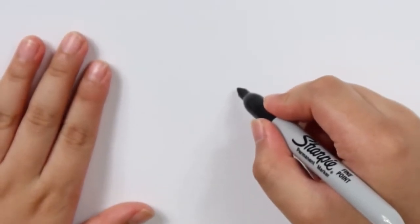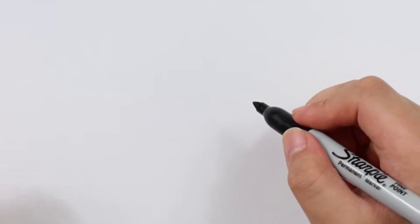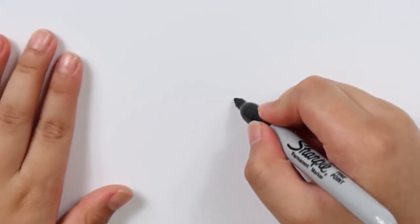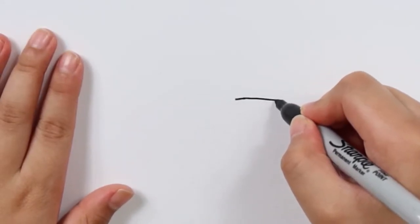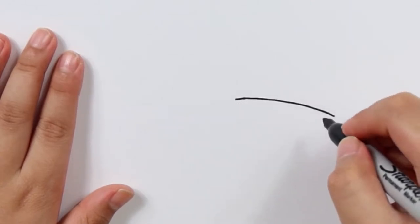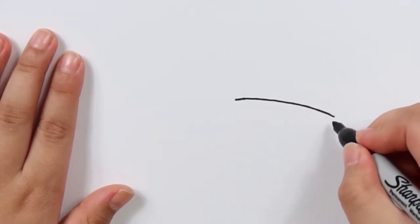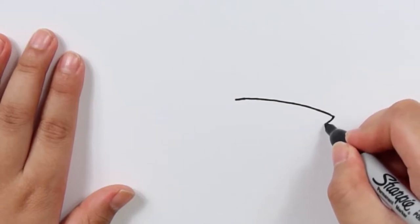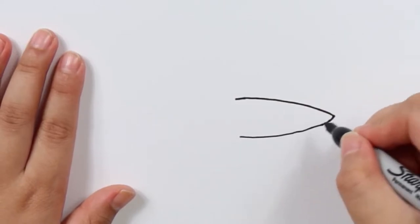So you start with the head, at least that's what I like to do. You don't have to start with the head but I will. It's kind of like a hill going down and then draw kind of like a rocket shape back up to here.